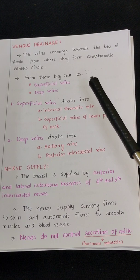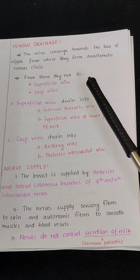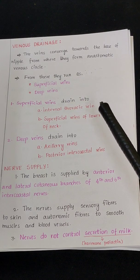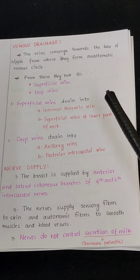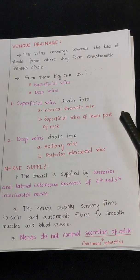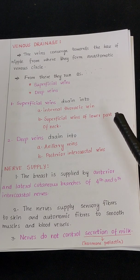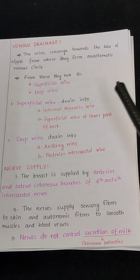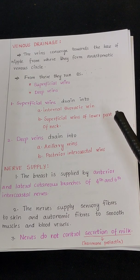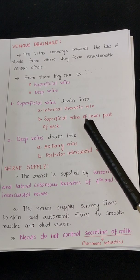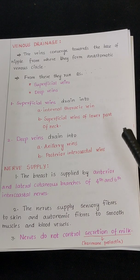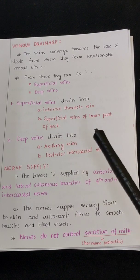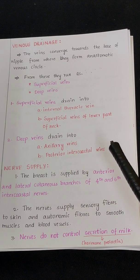From there, they run as superficial veins and deep veins. The superficial veins drain into the internal thoracic vein and superficial veins of the lower part of the neck. The deep veins drain into the axillary veins and posterior intercostal veins.